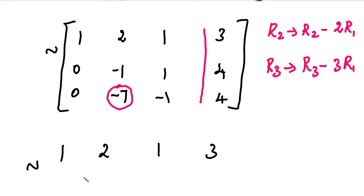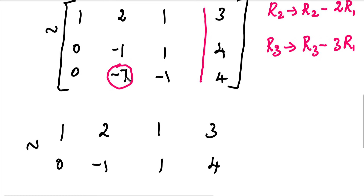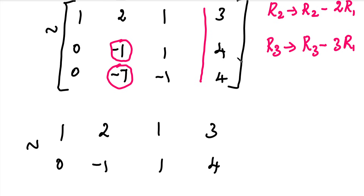Now we need to eliminate the minus 7 in the third row, second column. We choose the element minus 1 from the second row as pivot. To make that element 0, we subtract 7 times R2 from R3. That is, R3 = R3 minus 7 times R2.